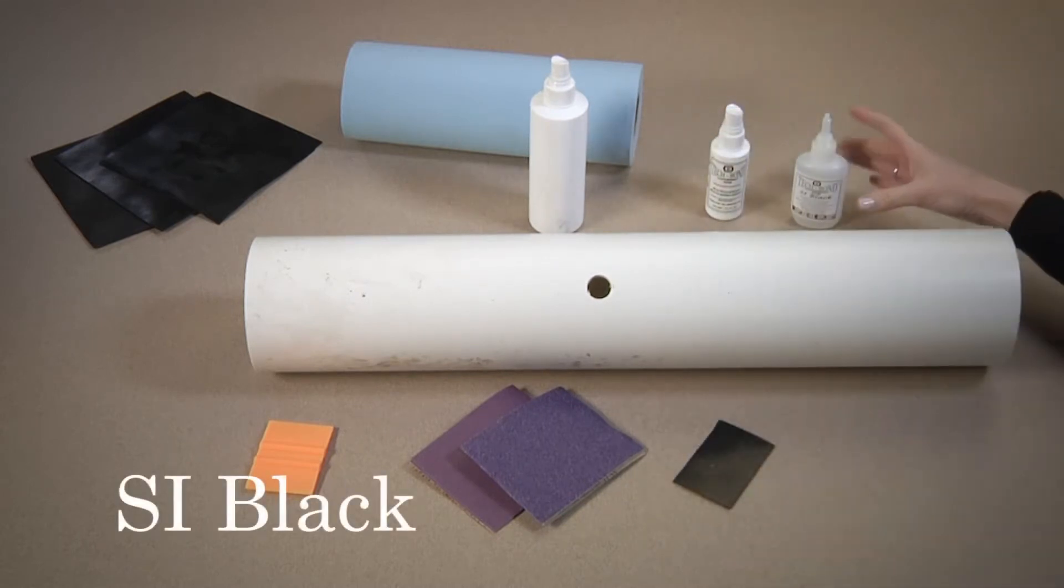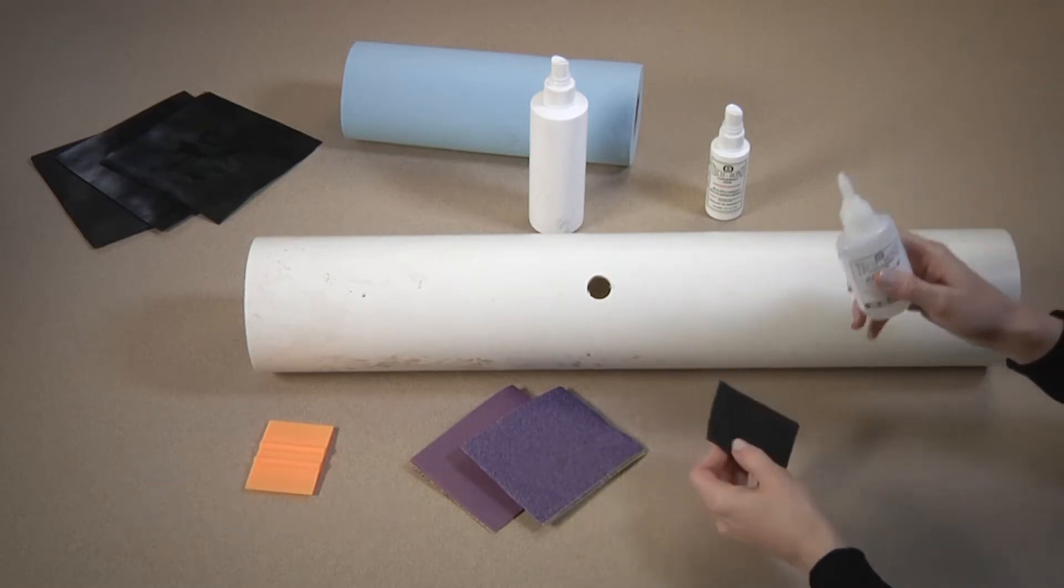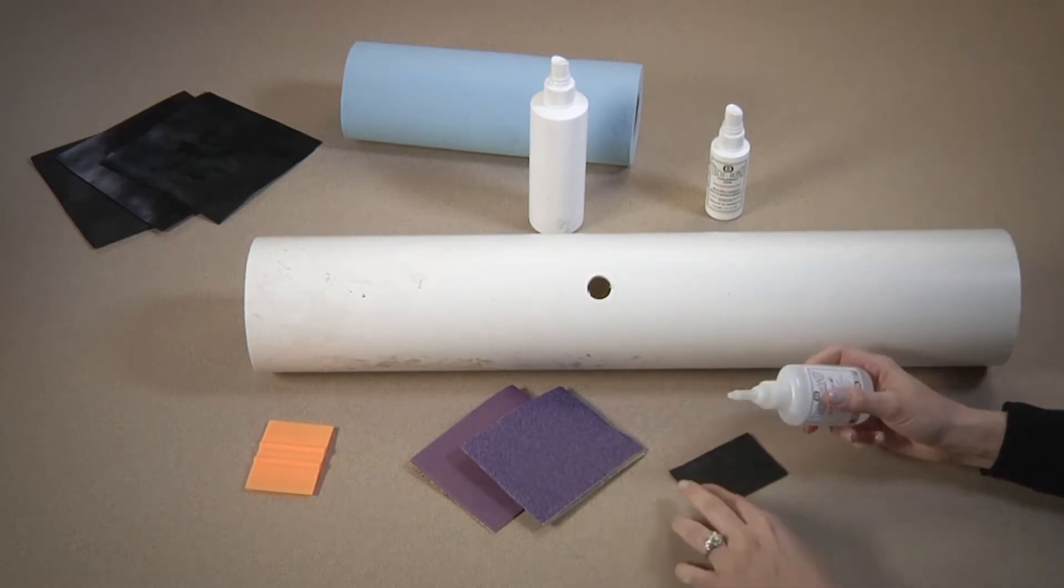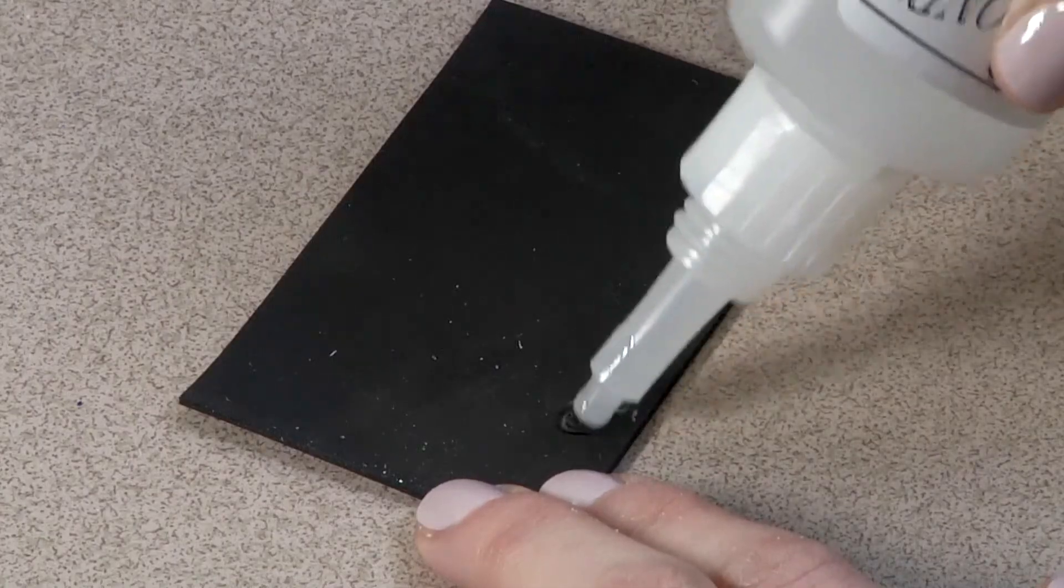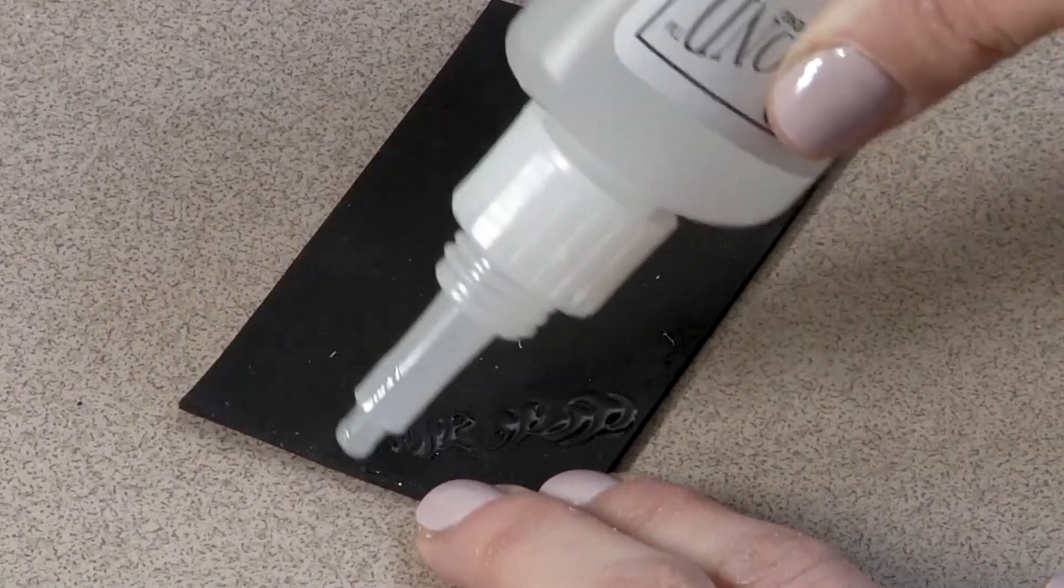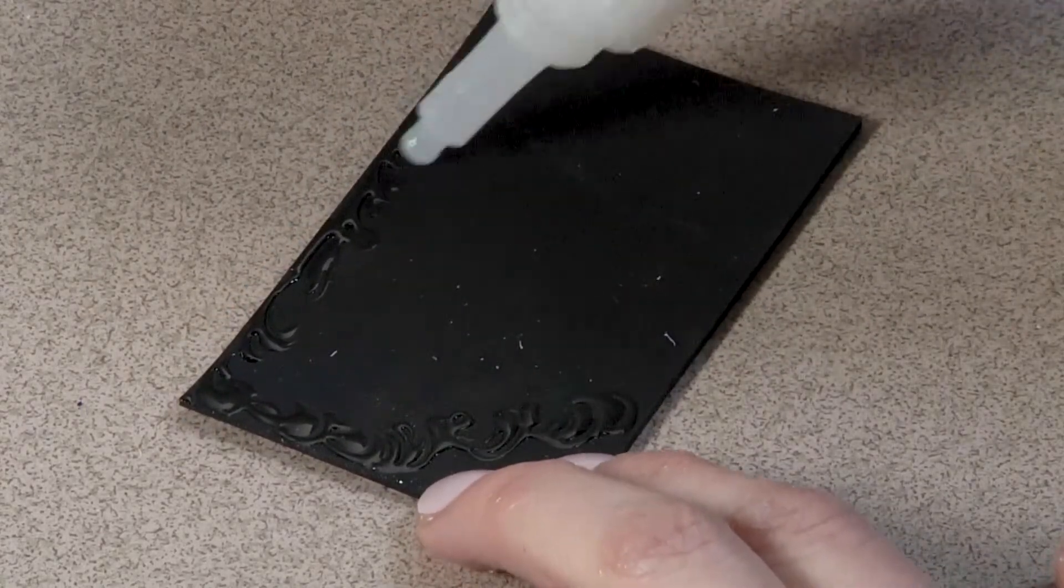Second step, you apply the SI Black to the matte side of the patch. It is critical to cover the patch all the way to the outside edges, being sure to leave two diagonally opposite corners free of the adhesive to give yourself corners to grab onto when applying the patch.